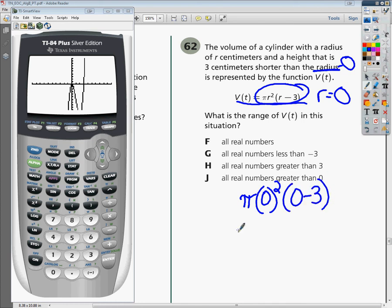Well, this works out to be π times 0 times negative 3. And we all know that when we multiply anything by zero, we get zero.